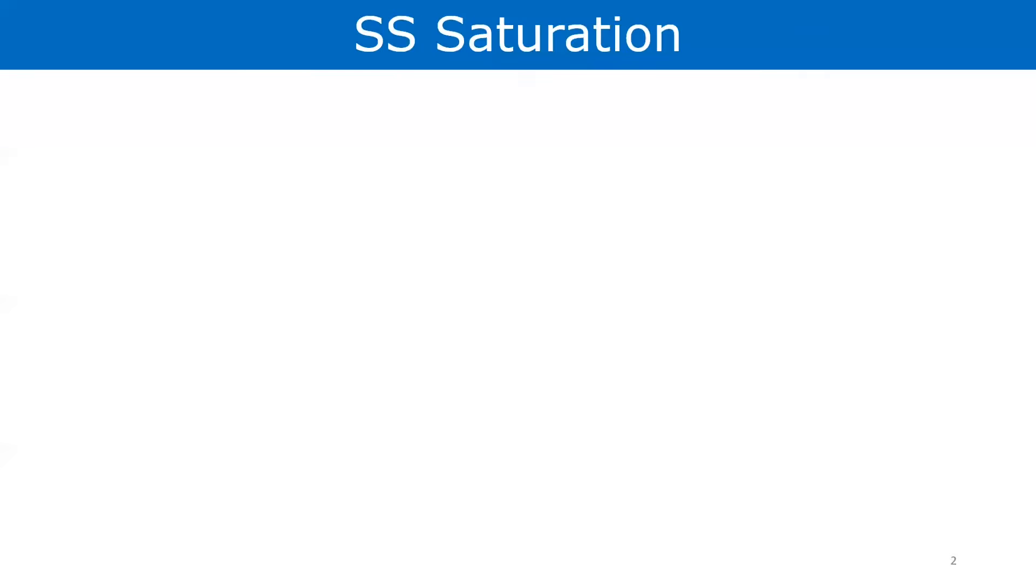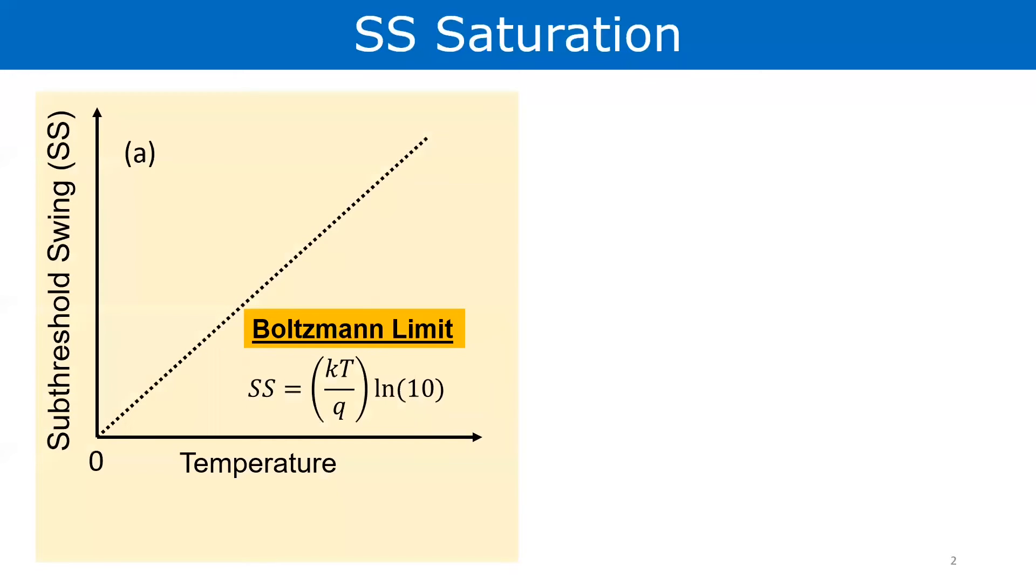Now fundamentally there is a limit to this subthreshold swing due to the inherent physics of the MOS transistor. That limit is called the Boltzmann limit and is linear with temperature as shown. If you are curious about how we can derive this limit, then you can consider the exponential IV relation of a MOSFET and see how much change in the gate voltage is required to get a 10 fold increase in the drain current.